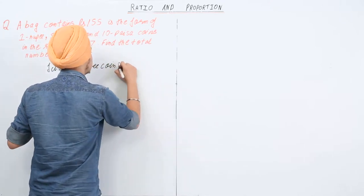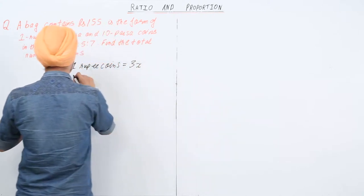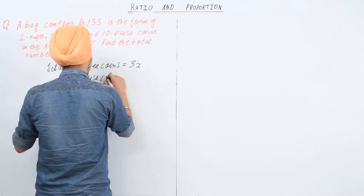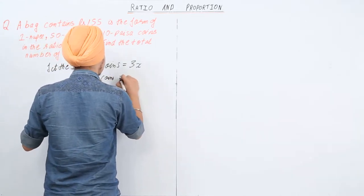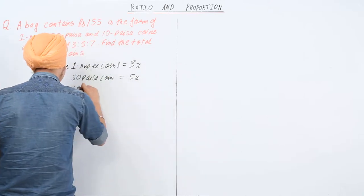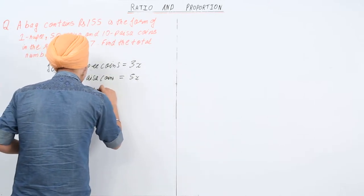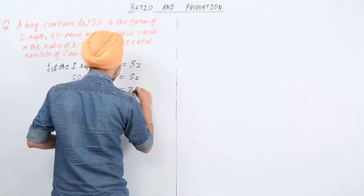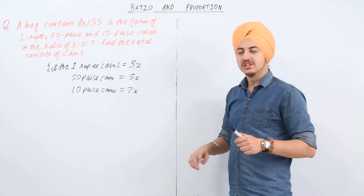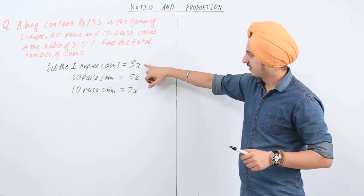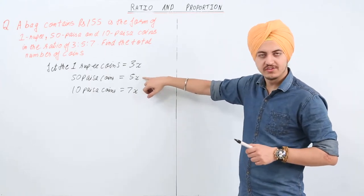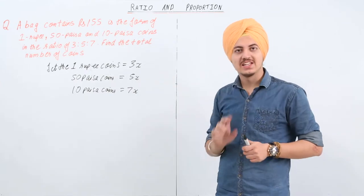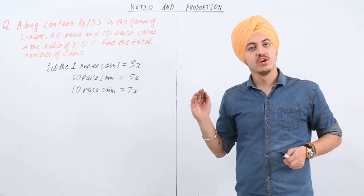So 1 rupee coins equal to 3x, 50 paisa coins equal to 5x, and 10 paisa coins equal to 7x. We have to find out the value of x, and then we can add these three to find out the total number of coins.